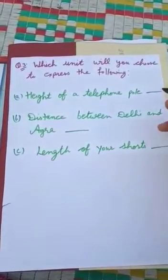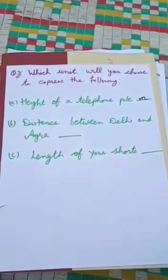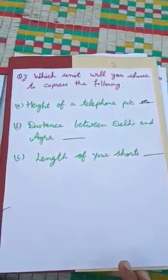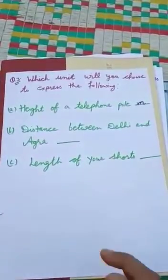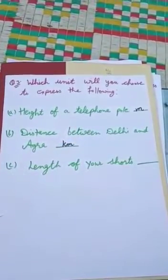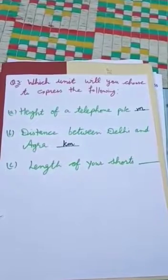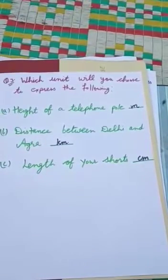Question 3: Which unit will you choose to express the following? Part A — height of a telephone pole: the answer is meter. Distance between Delhi and Agra: to measure a large distance we use kilometer, so the answer is kilometer. Length of your shorts: for measuring a short length we use centimeter, so the answer is centimeter. I hope the concept is clear to you.